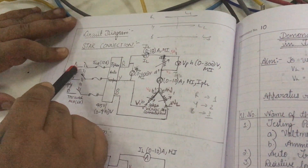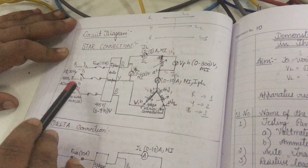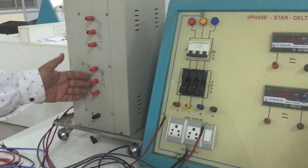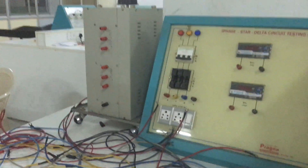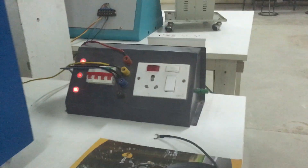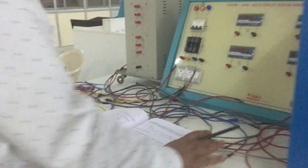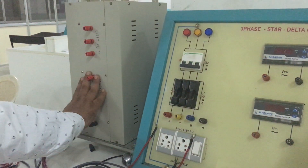This is the connection for the star and delta arrangement. You can see the supply R, Y, and B, and this is the three-phase auto transformer. The input of the auto transformer is connected from the back side to the main supply. The R, Y, and B supply has to be given to the auto transformer.